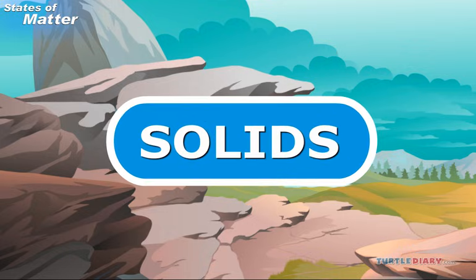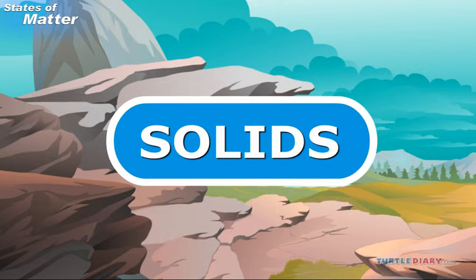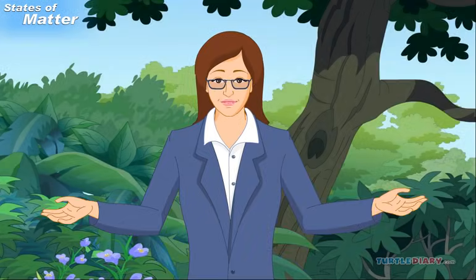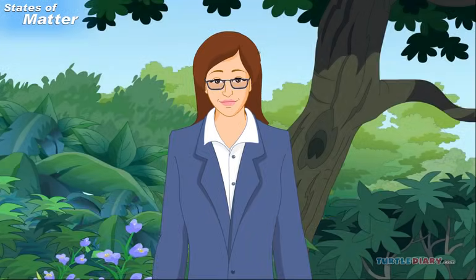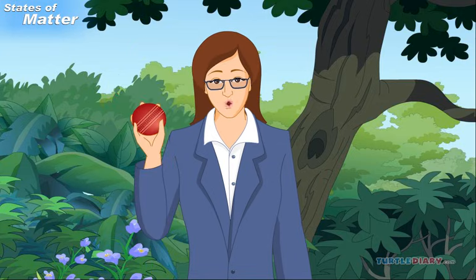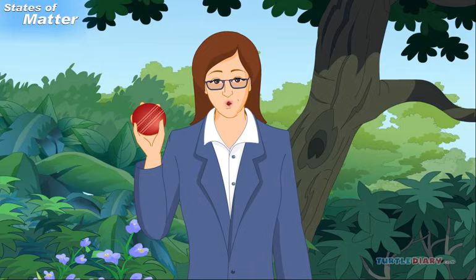Let's learn about solids first. Solids have shapes. A book is a solid in the shape of a rectangle. A ball is a solid in the shape of a circle.